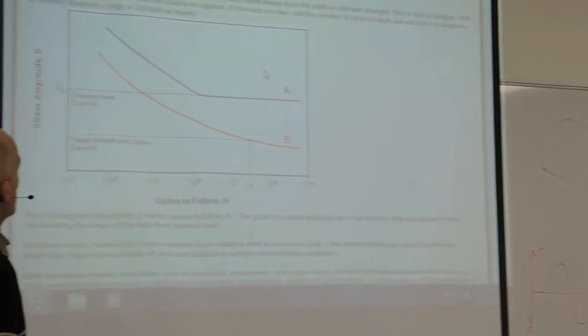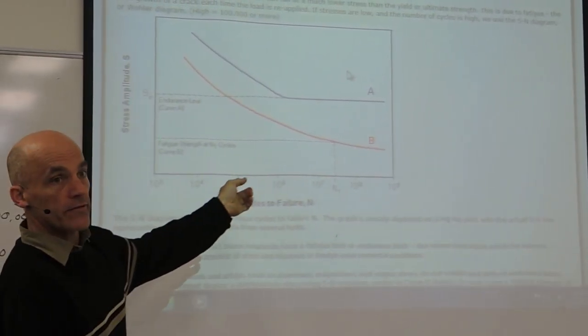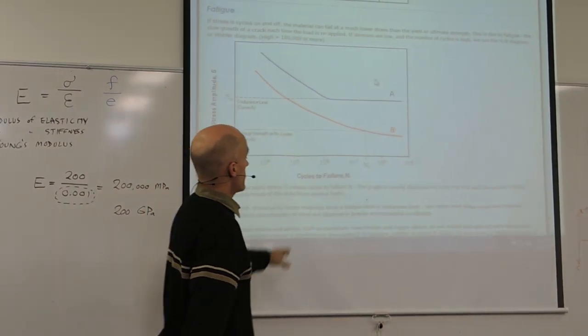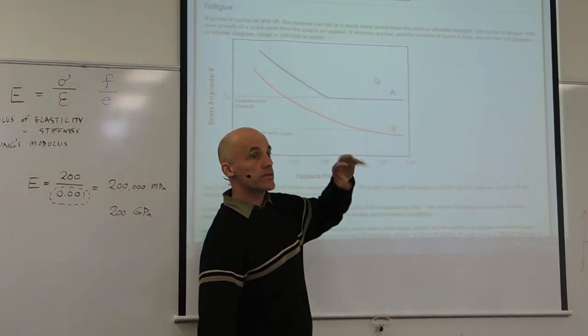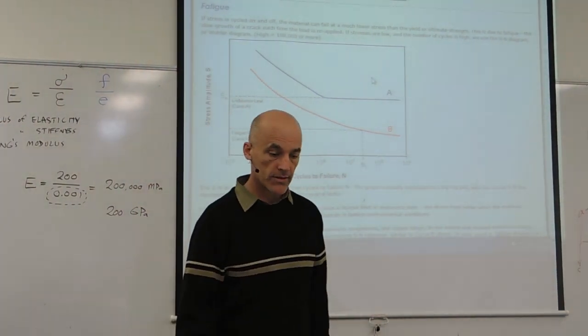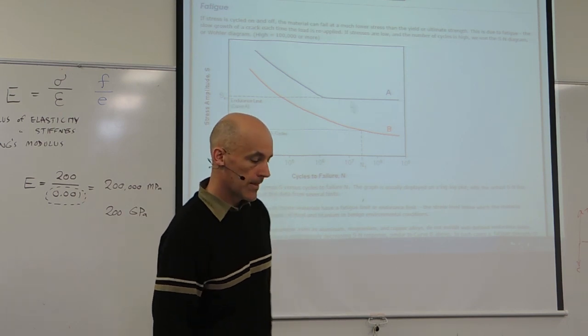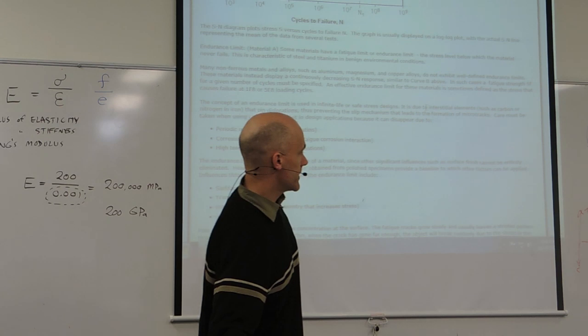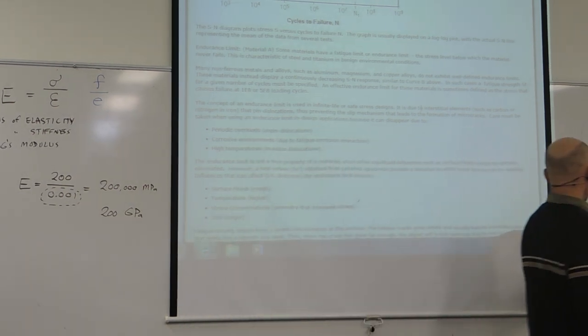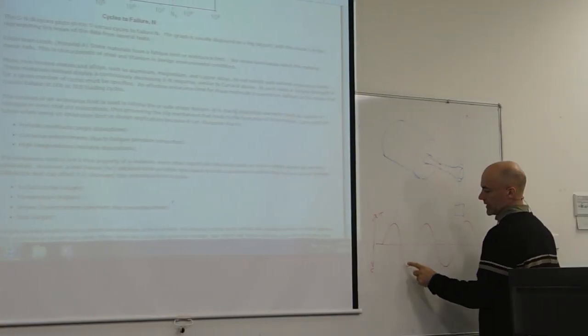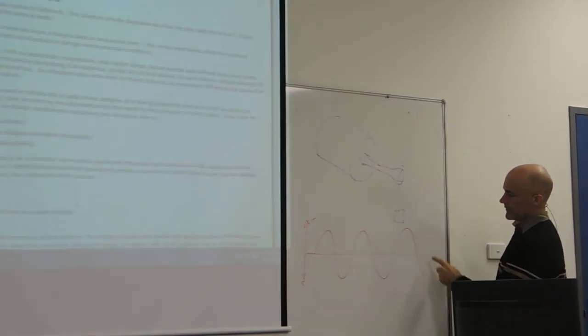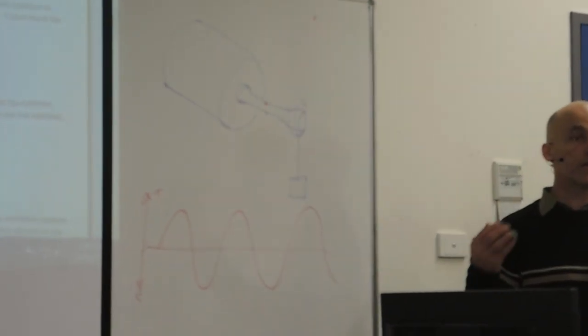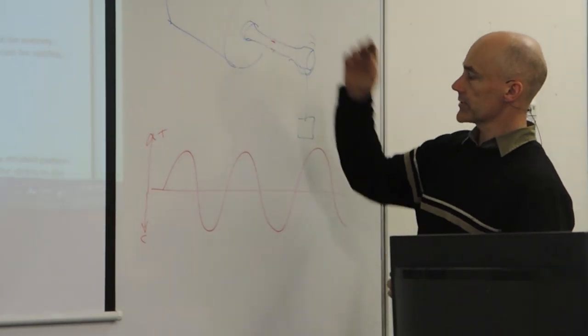So we don't have good fatigue data for every single alloy, usually only the important ones and the ones that are used in fatigue environments, like materials in bearings and bolts and things. Now the type of fatigue that is the worst is this one, where it's fully compression and tension. That's a fully alternating fatigue. That is the one that has the most power to cause a crack.